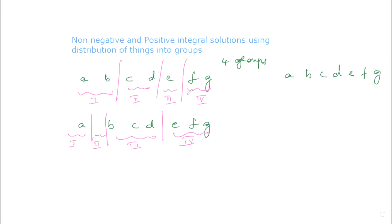We assume that these three partitions are also another three kinds of letter. So seven letters are there and three partitions are there. Together we can arrange them in 10 factorial ways, but since three partitions are of the same kind, we divide by 3 factorial. So finally we get 10 factorial by 3 factorial as the number of ways of dividing seven elements into four groups, which also includes arrangement and blank groups.